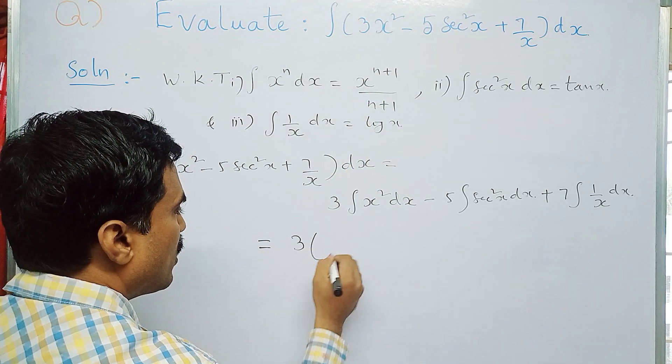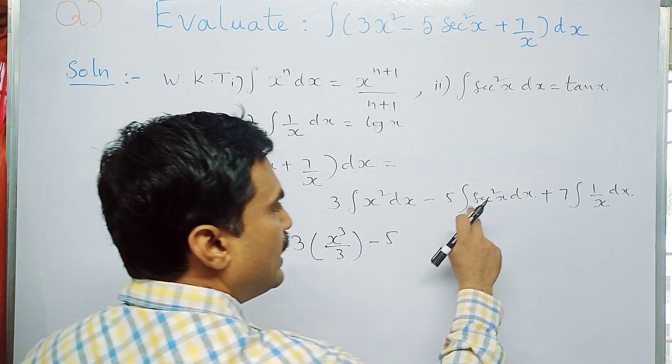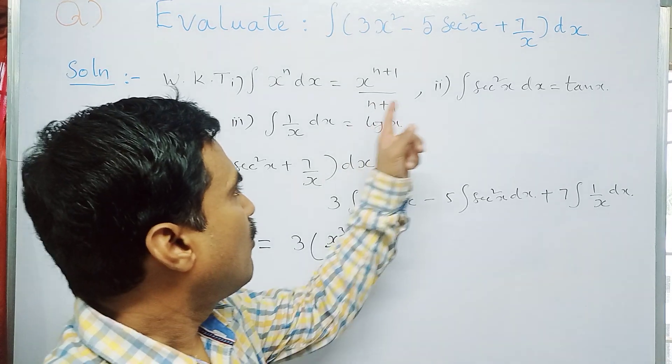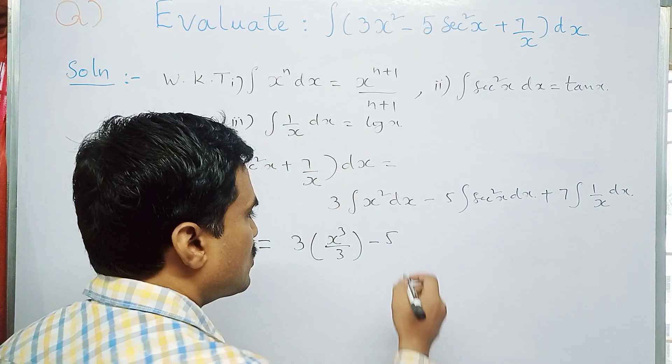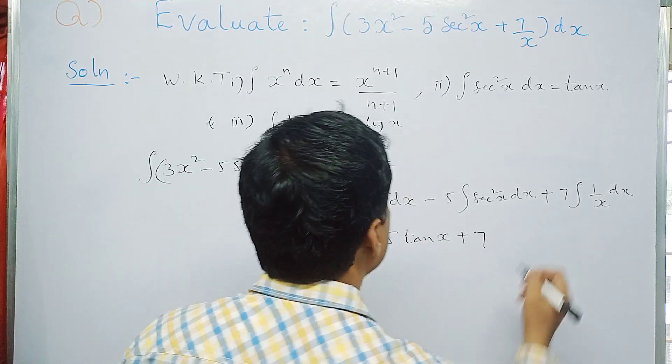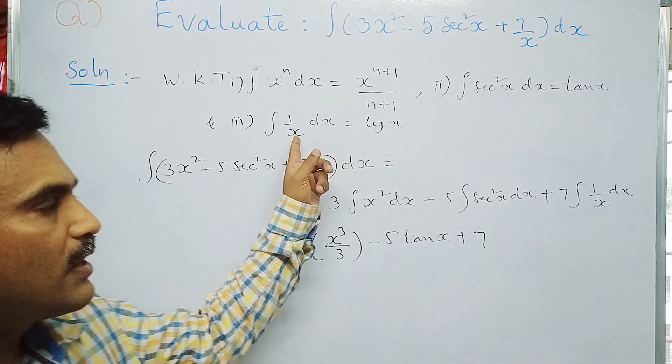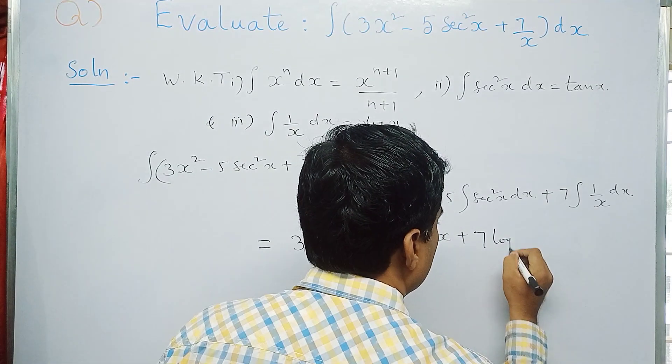Minus 5 into—now integral sec²x dx, now apply the second formula, that is integral sec²x dx is tan x—so 5 into tan x. Plus 7 into—now integral 1 by x dx, what is integral 1 by x dx? Apply the third one, that is log x—plus c.